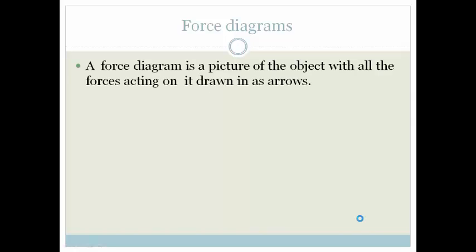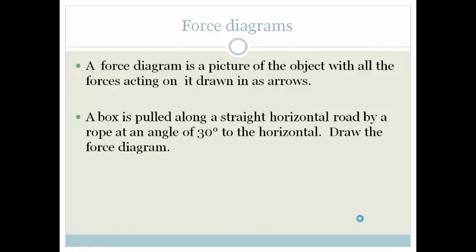Let's look at the force diagram. A force diagram is a picture of the object with all the forces acting on it drawn in as arrows. Let's do an example: a box is pulled along a straight horizontal road by a rope at an angle of 30 degrees to the horizontal. Draw the force diagram.